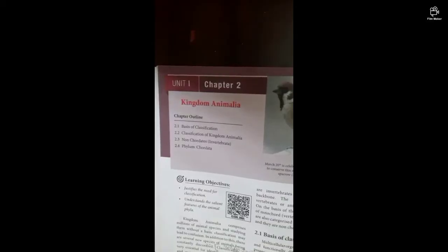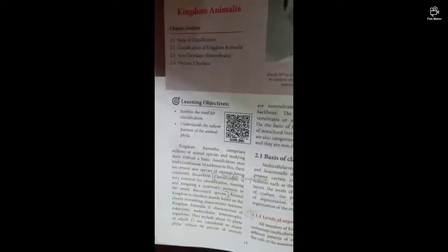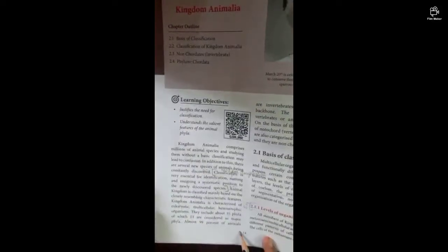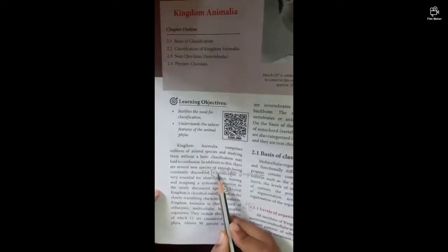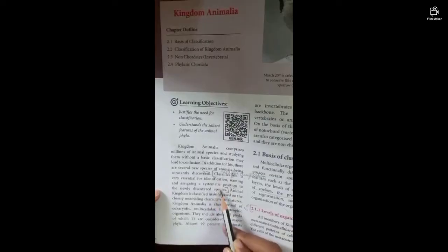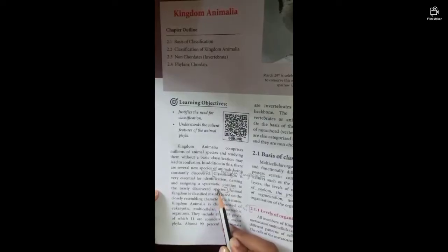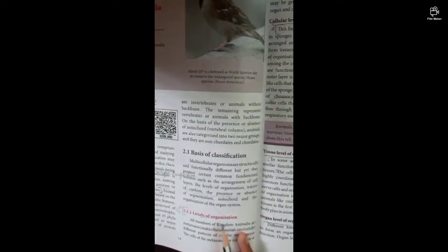In this video we are going to mark Class 11 standard Unit 1 Chapter 2 Kingdom Animalia interior questions. The first question is 'need for classification' on page number 14, where classification starts to discover species.